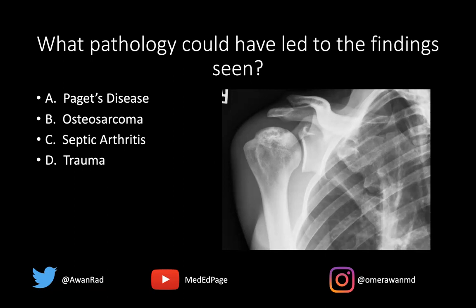What we're seeing here is an area of focal geographic serpiginous sclerosis involving the subarticular aspect of the humeral head. Notice that there's no articular collapse at the glenohumeral joint, no fracture, no subchondral fracture — just this geographic area of mixed sclerosis and lucency that's fairly well-defined along the humeral head. This is a nice case of avascular necrosis or osteonecrosis, and of the four choices, the only one that typically and characteristically leads to osteonecrosis is trauma.